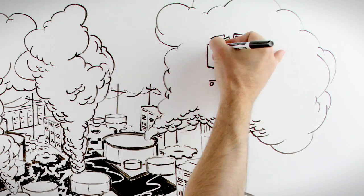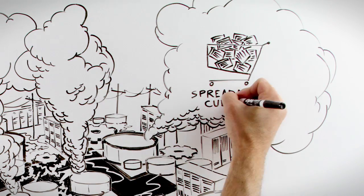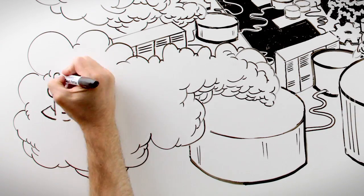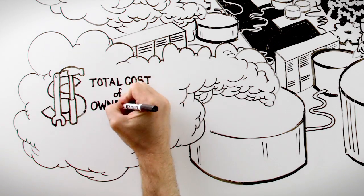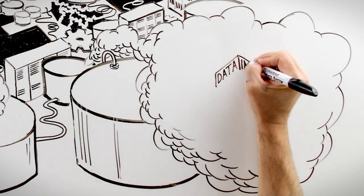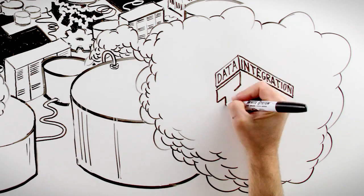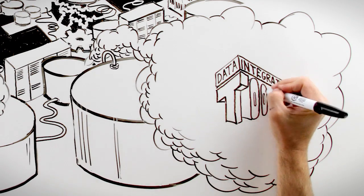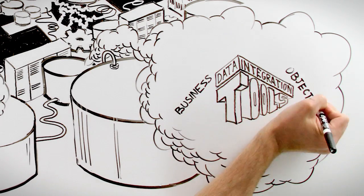As you might expect, this gives rise to a spread-mart culture as users look for ways to get the information they need. Companies cite total cost of ownership as the number one challenge they face with their data integration tools. Even worse, nearly seven out of ten say these tools are actually impeding, not helping, their ability to achieve strategic business objectives.